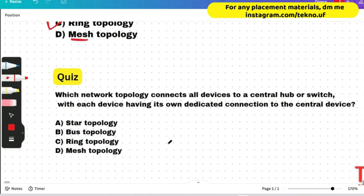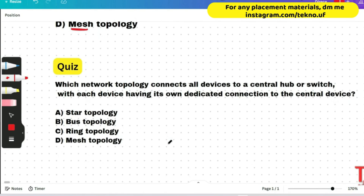Here is a quiz question. Whatever I am showing to you as a quiz, please give me the answer in a single comment so that I can summarize your answers. Which network topology connects all devices to a central hub or switch, with each device having its own dedicated connection to the central device? Just imagine how a star looks, how a ring looks, how a bus looks, how a mesh looks — you will be able to answer the question.